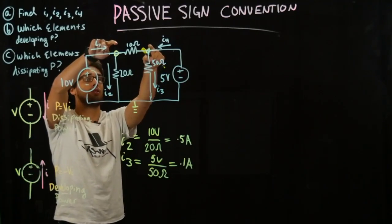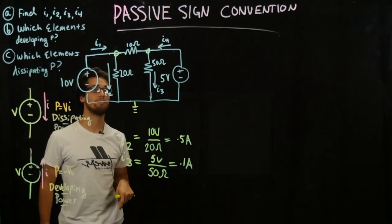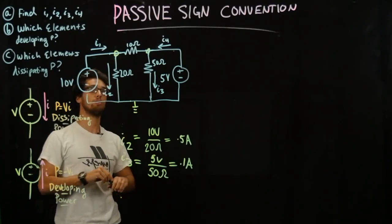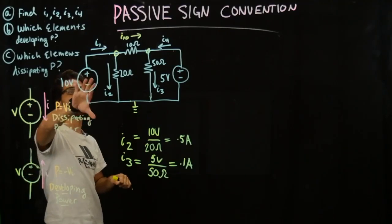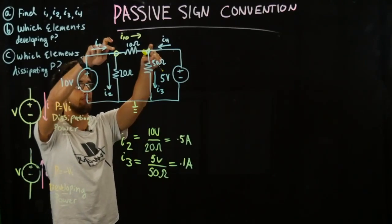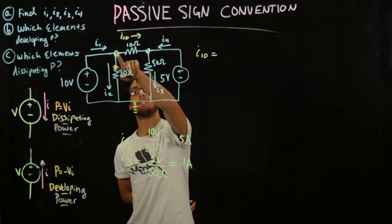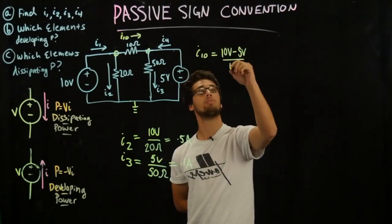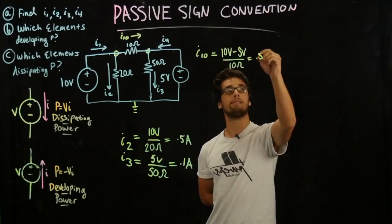We know the two voltages at these two points, and that means we can figure out the current flowing through these 10 ohms. It's not asked for specifically, but it can be very helpful later to find I1 and I4. So let's call this I10, and let's say it's flowing that way. We can find the voltage across these two points, which is 10 minus 5. So I10 is equal to 10 volts minus 5 volts over 10 ohms, which gives us the current flowing through there: 0.5 amps.